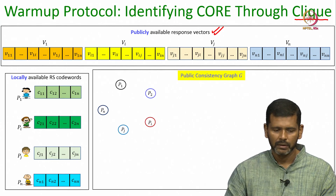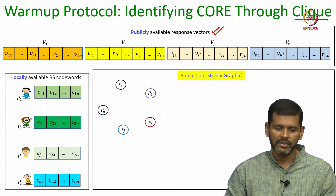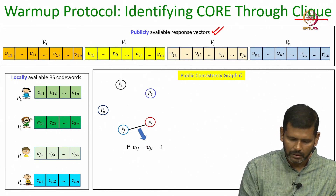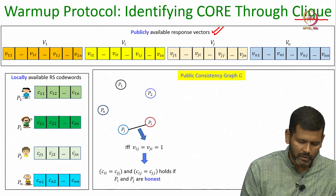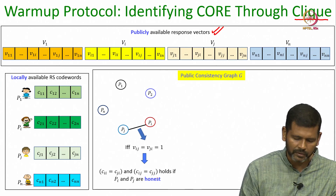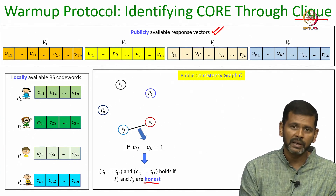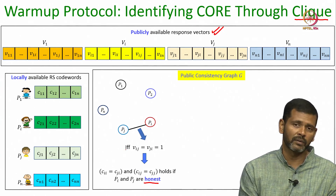Based on the publicly available response vectors, the parties would have prepared a consistency graph where an edge between nodes representing parties Pi and Pj implies that the ith component in Pi's codeword is the same as the ith component in Pj's codeword, and the jth component of Pj's codeword is the same as the jth component in Pi's codeword, provided both Pi and Pj are honest. The edge would have been added only if Pi is not in conflict with Pj, and Pj is not in conflict with Pi in their respective response vectors.